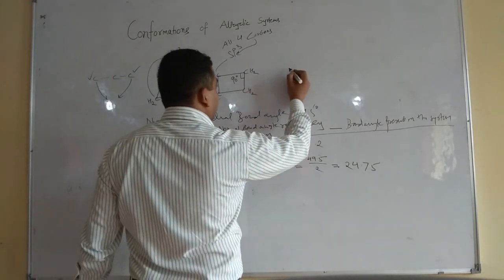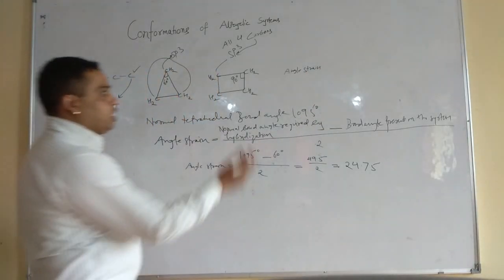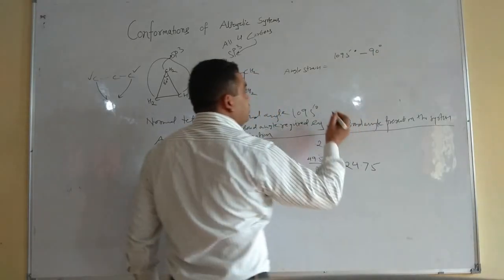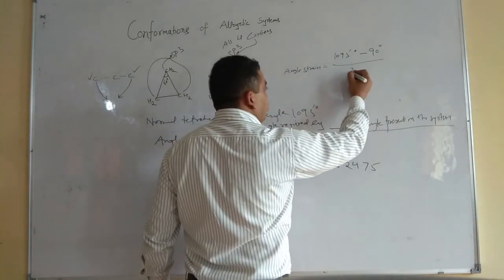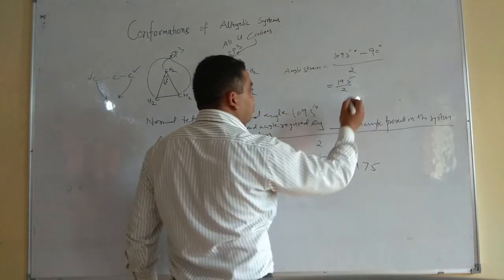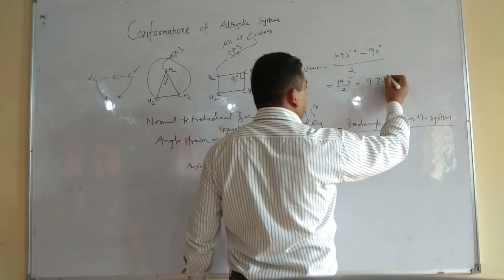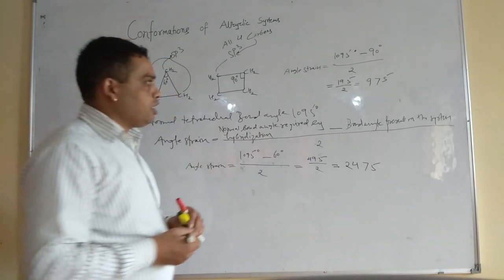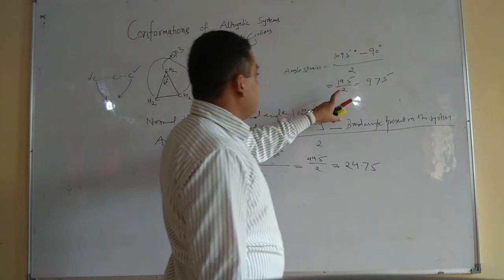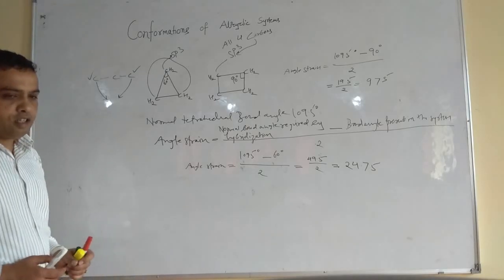Similarly, we can calculate the angular strain for cyclobutane. Since hybridization is sp3, we get: (109.5° − 90°) / 2 = 19.5 / 2 = 9.75 degrees. This 19.5 degrees of angle strain is equally distributed to the two terminal carbon atoms, as explained for cyclopropane.